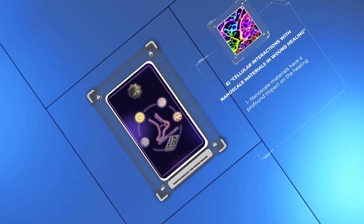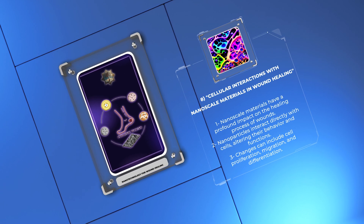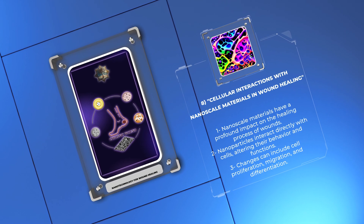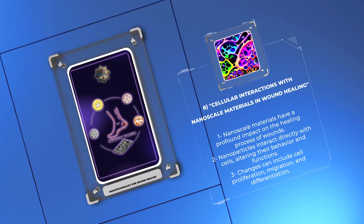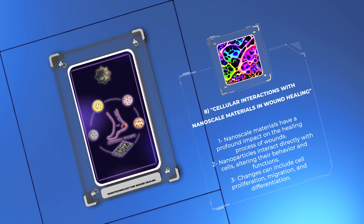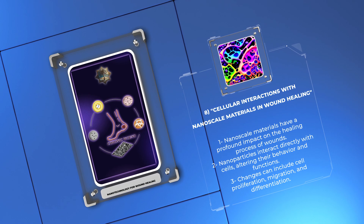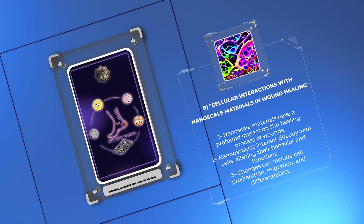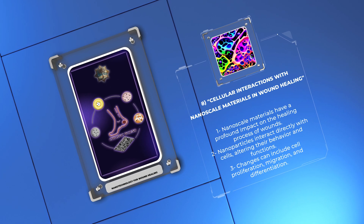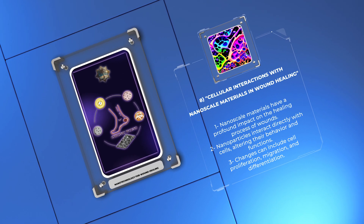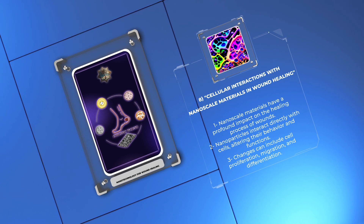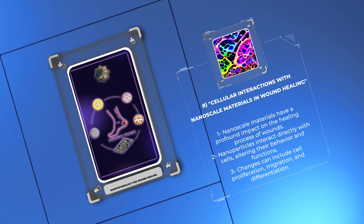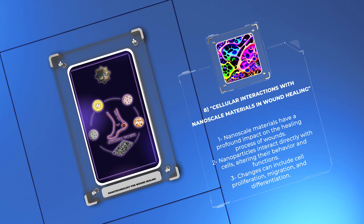When nanoscale materials come into contact with cells, they can have a profound impact on the healing process of wounds. This interaction occurs when nanoparticles interact directly with cells, altering their behavior and functions. These changes can include cell proliferation, or growth, cell migration, the movement of cells, and cell differentiation, transforming into specialized cell types. Gaining a deeper understanding of these cellular interactions is crucial for effectively using nanotechnology to enhance wound healing outcomes.